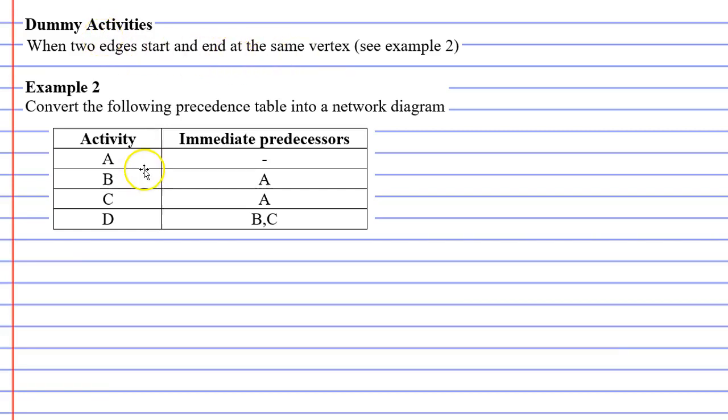So let's get right into the example. We're going to convert the following precedence table into a network diagram. We need a vertex where we're going to start, a starting vertex. We can see that activity A doesn't have any immediate predecessors, so that one's going to come out from the start vertex. We'll call that edge A.